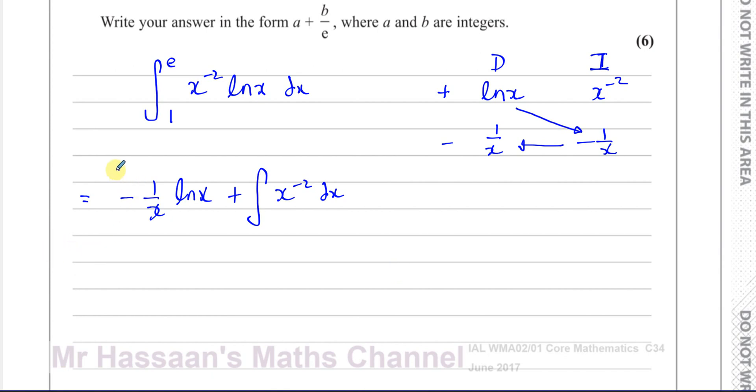This actually now will integrate quite easily. Let's put our limits in of e and 1. So here we have minus 1 over x times ln(x). And this, when you integrate it, you add 1 to the power and divide by the new power, you end up with minus 1 over x. So you end up with this as your integral.